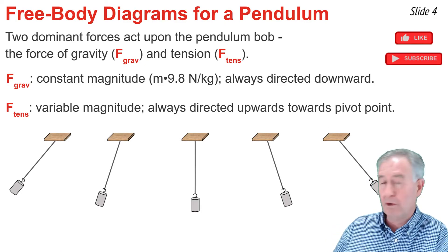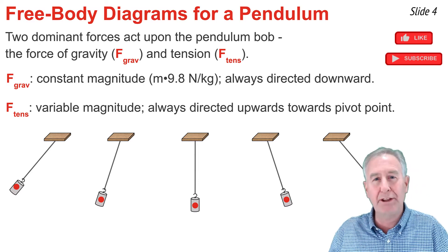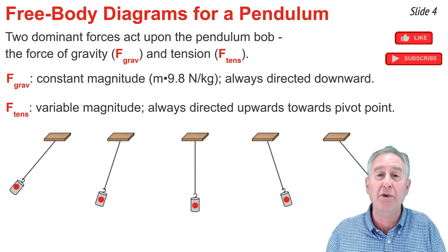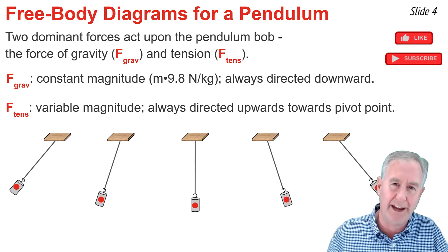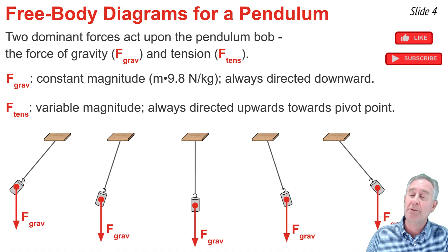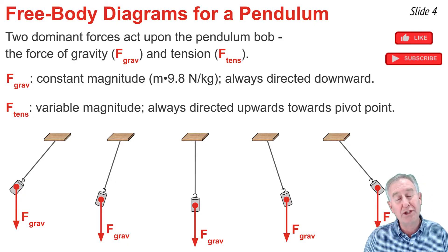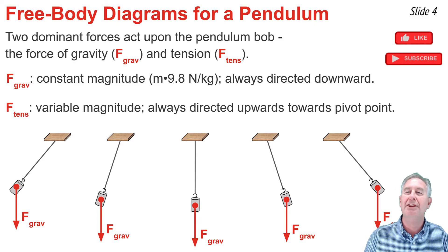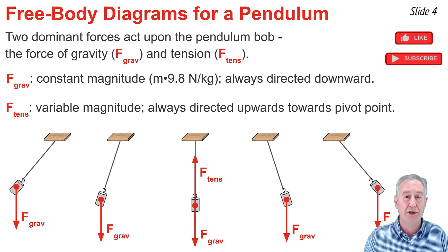We're going to draw free body diagrams for five positions along the circular arc of a pendulum bob. From the dot in the middle of the bob, we'll draw two arrows — one for each of the forces — putting them in the proper direction, labeling them by type, and sizing them relatively accurately. We'll begin with the force of gravity — that's the easy one: always down, always the same size. There you see the force of gravity for the five positions. The tension force is a little trickier; we're always going to draw it upwards along the string towards the pivot point. At the middle position, the tension force is drawn straight upwards, and you'll notice it's a little larger than the force of gravity — we'll talk about the relative size of tension in a later slide.